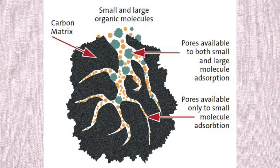About 5 grams of this material has the same surface area as a football field. This material works by having your waste stream flow through the material where specific impurities can then be trapped in the pores of the carbon, which leaves your effluent stream clean.